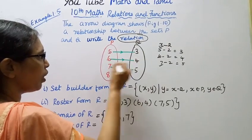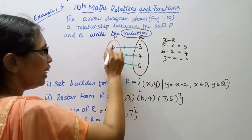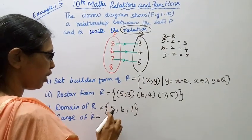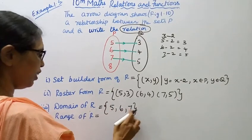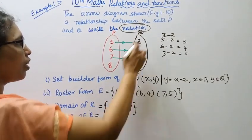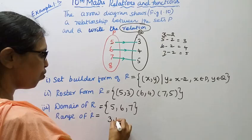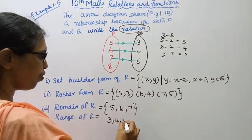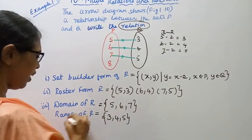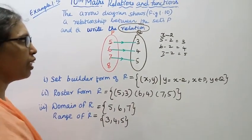The domain of R is {5, 6, 7} and the range of R is {3, 4, 5}.